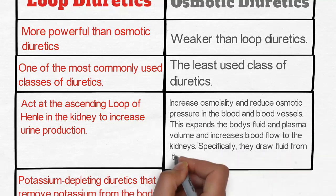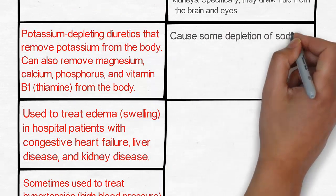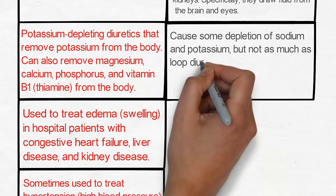Specifically, they draw fluid from the brain and eyes. Cause some depletion of sodium and potassium, but not as much as loop diuretics.